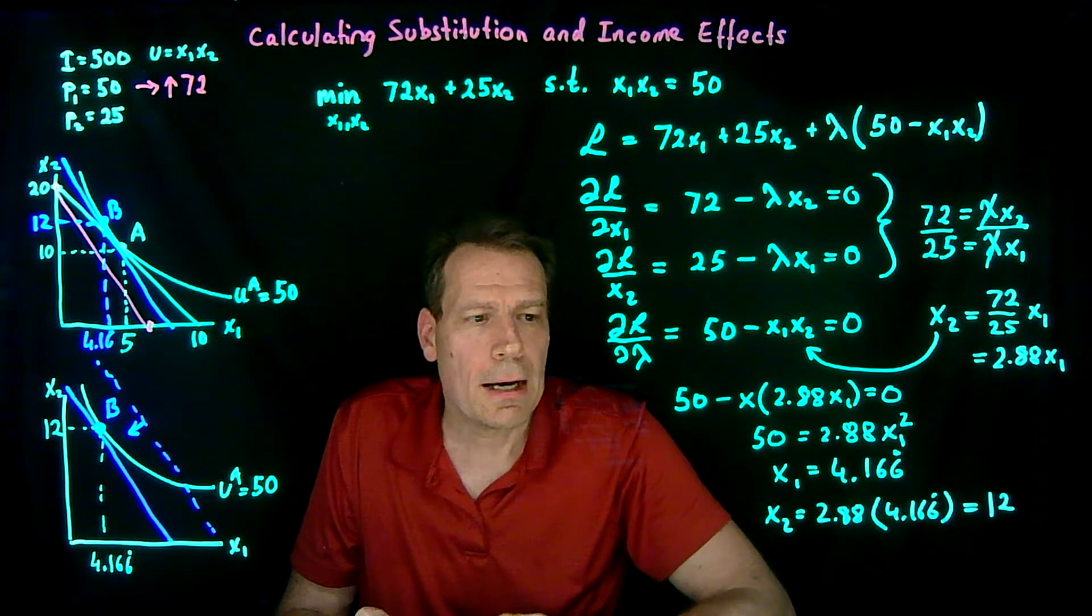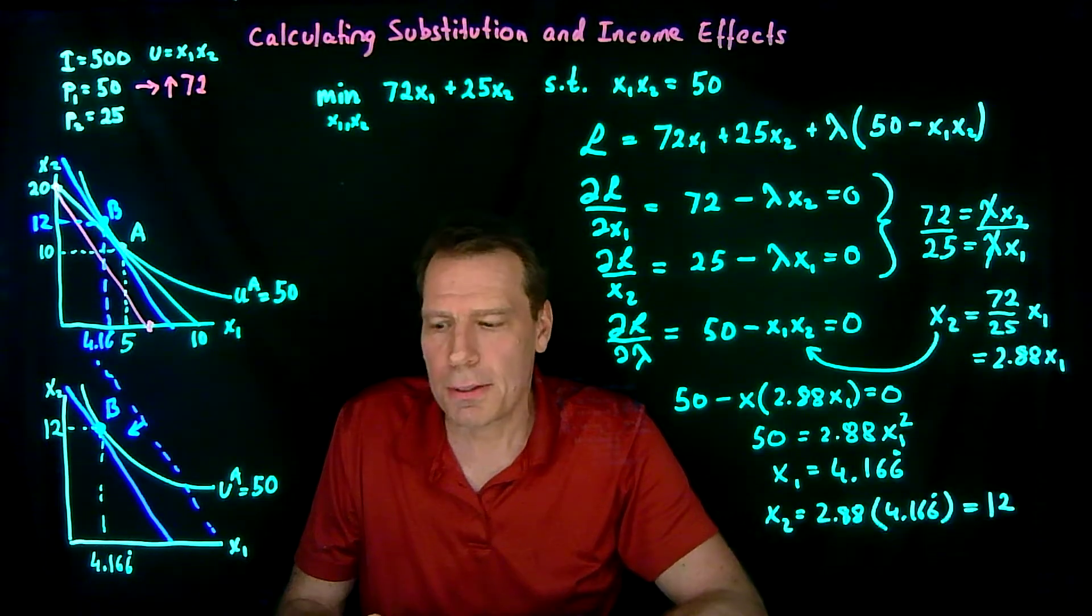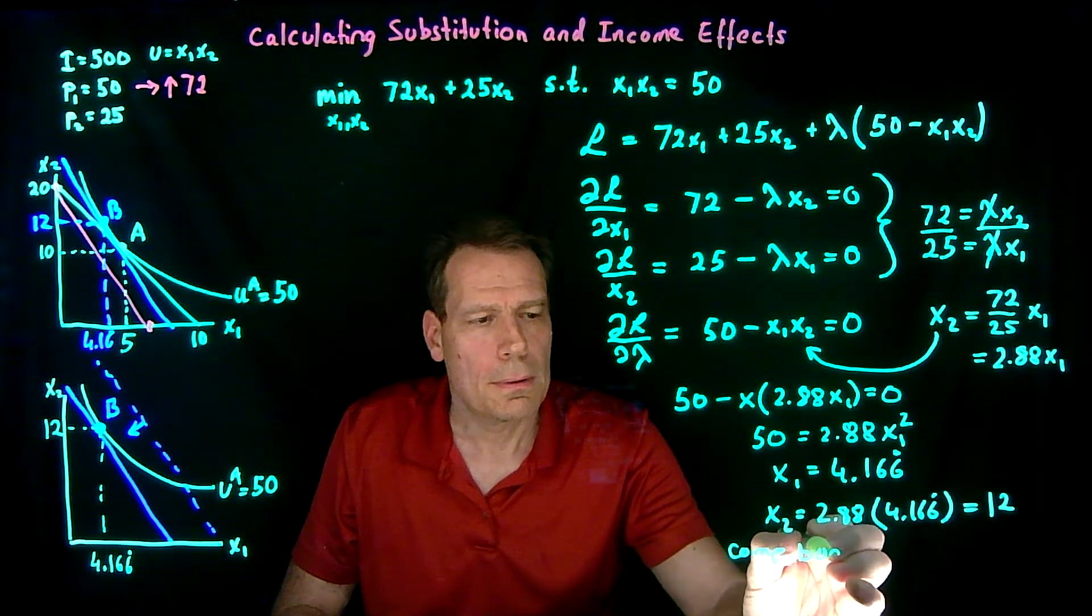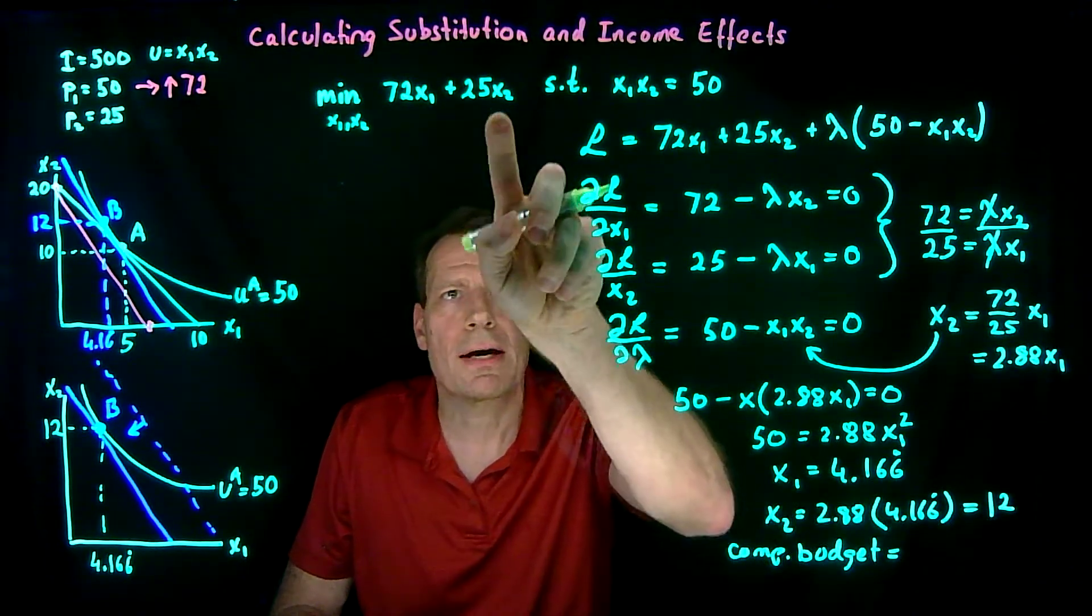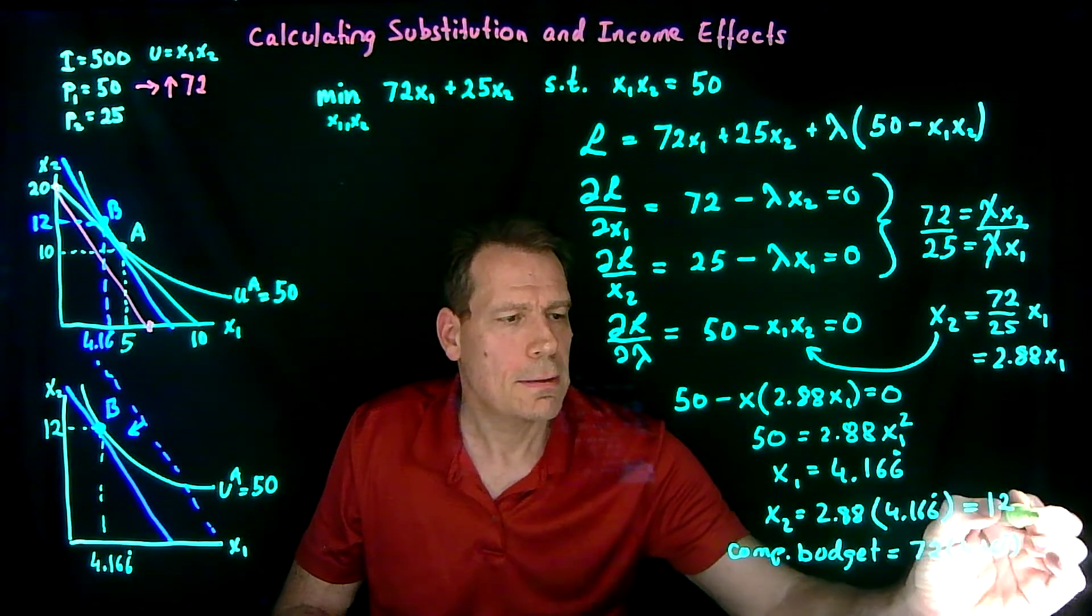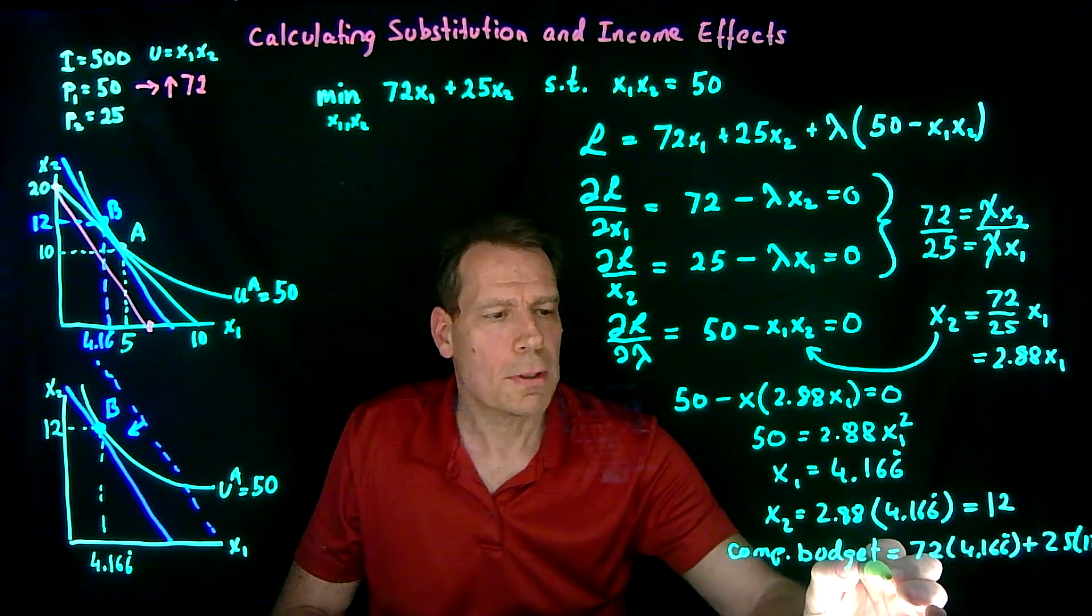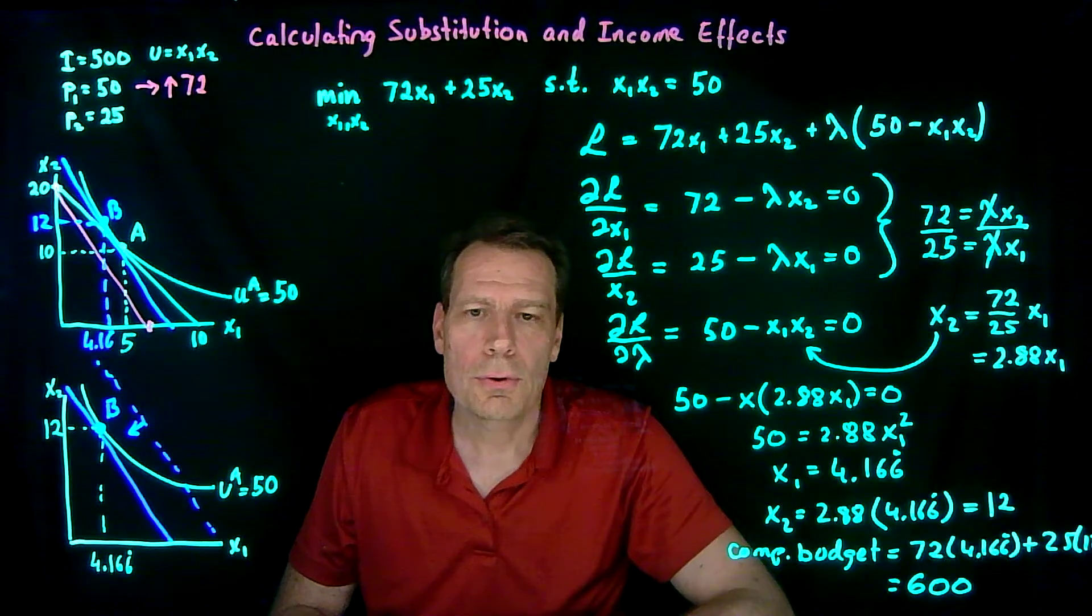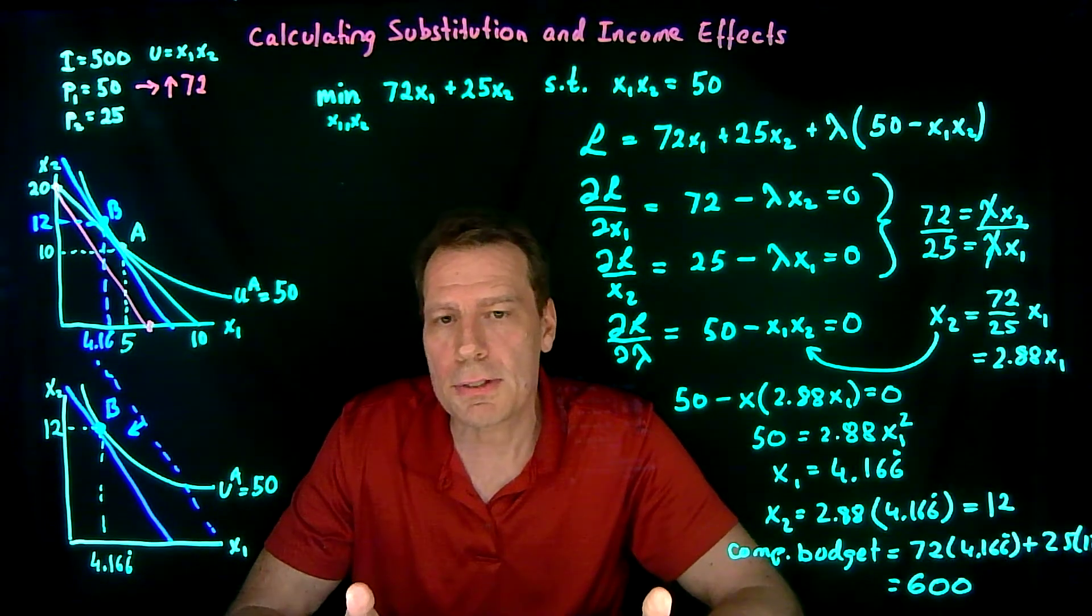The final thing we could ask is how much is it actually going to cost for us to reach bundle B? So what does that compensated budget, the blue budget, have to be? So the compensated budget is just what that bundle costs us. 72 times the x1 plus 25 times the x2, so 72 times 4.166 with the 6 repeating plus 25 times 12, and when we work that out that's equal to 600. We started with an income of 500 so you would have to give this consumer an additional $100 to be able to reach bundle B. That's the level of compensation that's required.